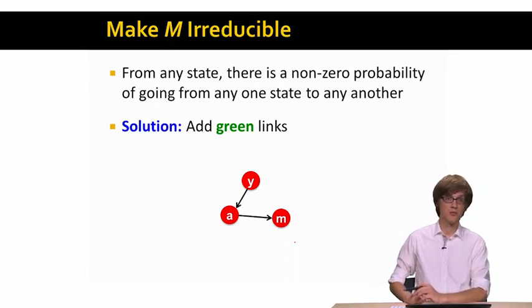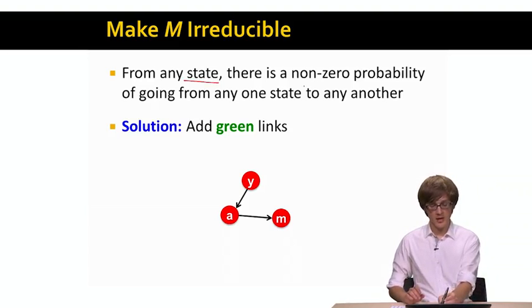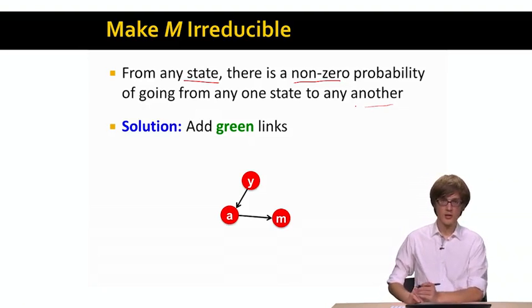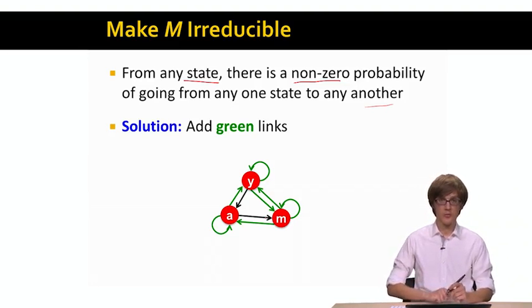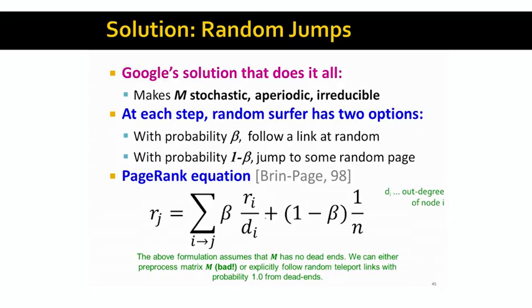Now the last property we need to talk about is irreducibility. And we say that M is irreducible when from any state there is a non-zero probability of going to any other state in the network. This means that basically we can never get stuck in a given state. So the way, for example, we would make our given graph here irreducible is to add all these other possible links which basically means we would add random jumps. So this would mean that there is a non-zero probability of going from any state to any other state in our graph. So putting all these together, this is exactly what random jumps do.